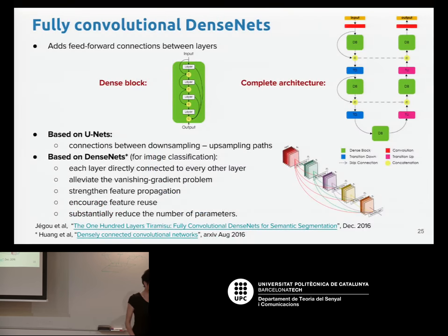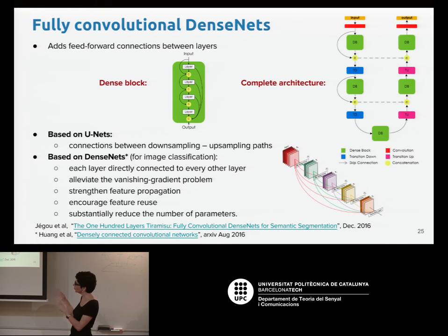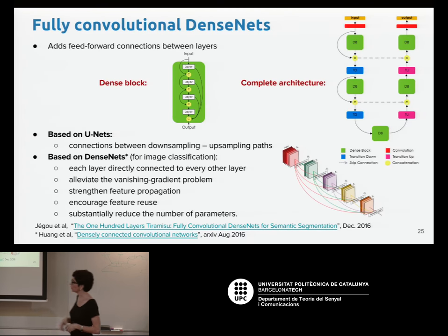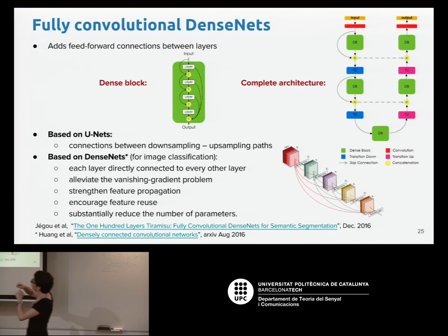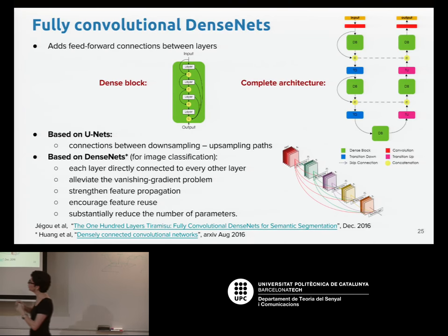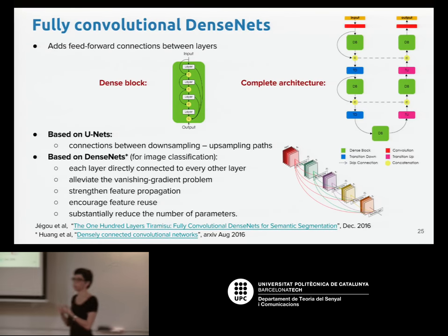Another approach is fully convolutional DenseNets. The idea is based on U-Net plus a model proposed for image classification called DenseNet. It uses U-Net's downsampling and upsampling paths with skip connections, plus dense blocks containing connections between all layers. The main idea of this model is to alleviate the vanishing gradient problem and encourage reuse of features.